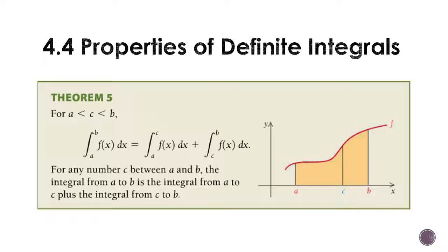Our first property is actually a theorem, and it says that for x values a, c, and b, where c is between a and b, the integral from a to b, which is the whole thing, is the integral from a to c plus c to b. It kind of makes sense if you look at the picture. If you take the area from a to c and add it to the area from c to b, you get the whole integral, and that's really just what the theorem says.